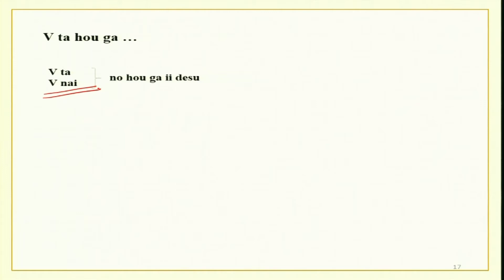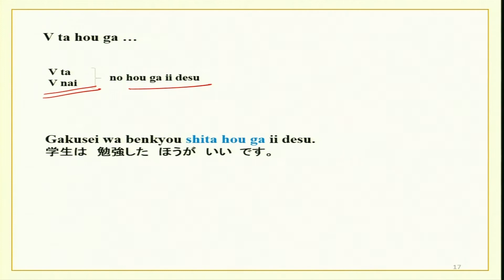We have learned 'hou ga' in lesson 13 in detail — how it can be used with verbs. Verb in plain past form or plain past negative form plus hou ga. It shows a strong suggestion by the speaker — directing or suggesting something to someone, telling the listener to do something which is generally preferred or better in the opinion of the speaker. Basically meaning it is better or good to do whatever the speaker is saying.